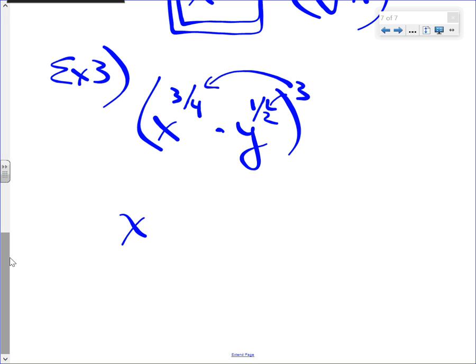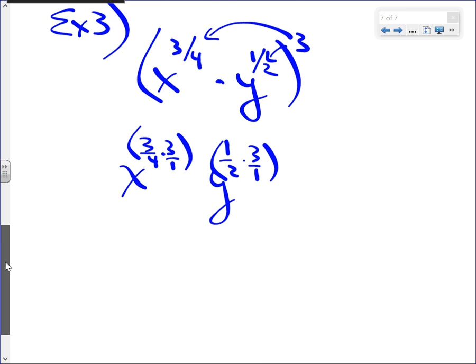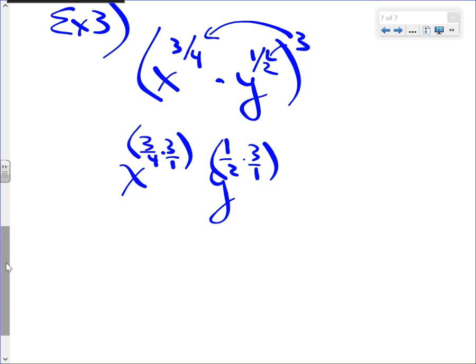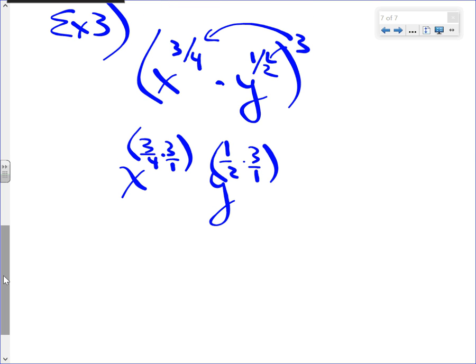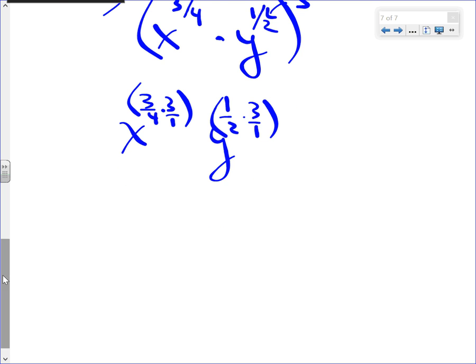So this will be x to the three-fourths times 3 power. I'll put 3 over 1. Look at that. Get it crazy. We're multiplying power to power. You multiply. Keep going. So I got x three-fourths times 3 over 1 is going to be nine-fourths. x to the nine-fourths power. y to the numerator times numerator 3. Denominator times denominator 2. We're done.